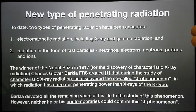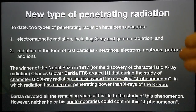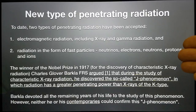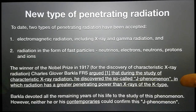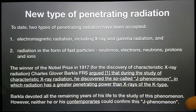I think it's important to look at what Alexander Shishkin and researchers that worked with him have discovered. The real revelation for me from this presentation was that the winner of the Nobel Prize in 1917 for the discovery of characteristic X-ray radiation, Charles Glover Barkler, argued that he discovered the so-called J phenomenon, in which radiation has greater penetrating power than X-rays of the K type.